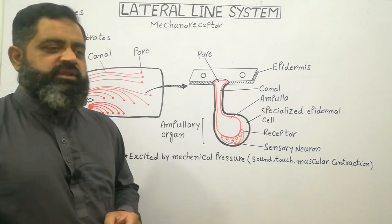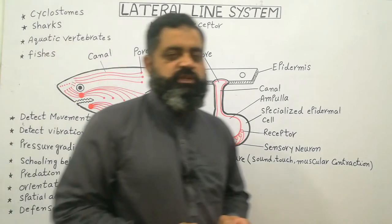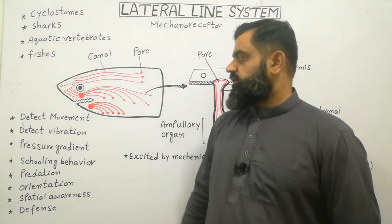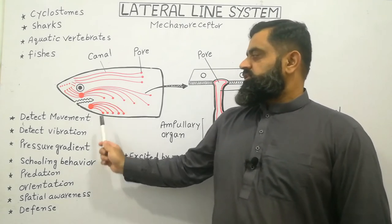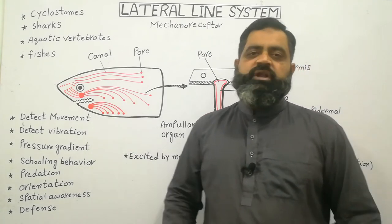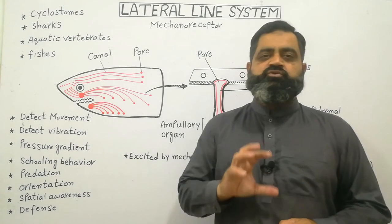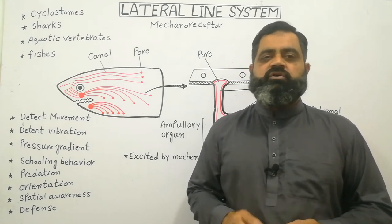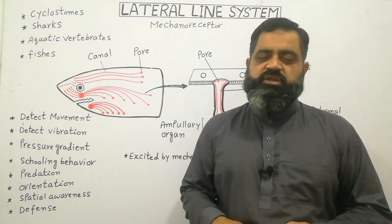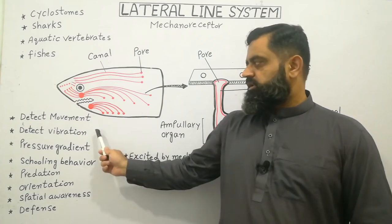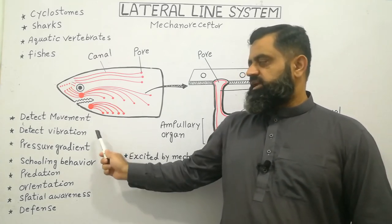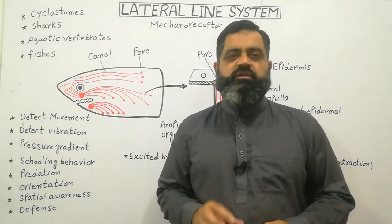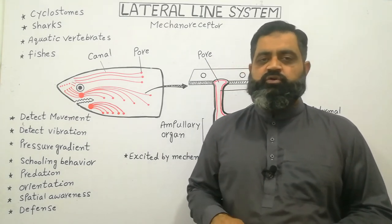Now let's look at the main functions of this system. It helps to detect movement in water and helps to stabilize and protect animals in offensive and defensive behavior. It also detects vibrations produced in water by another animal, fish, or some other mechanical object.